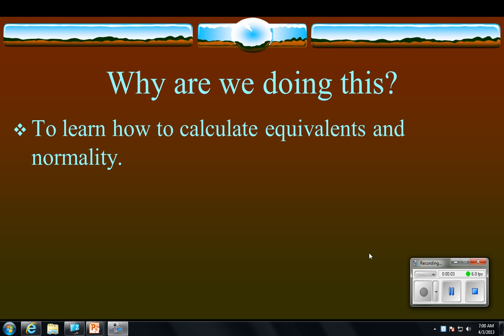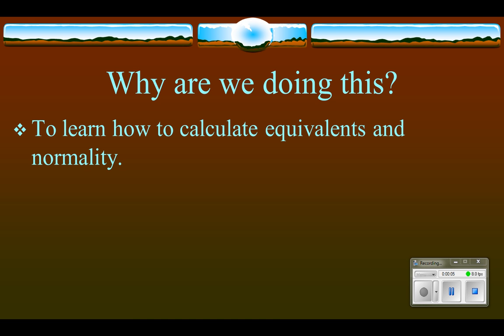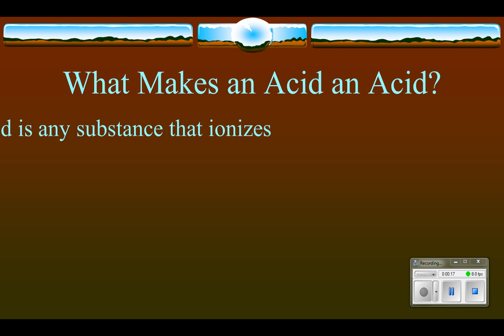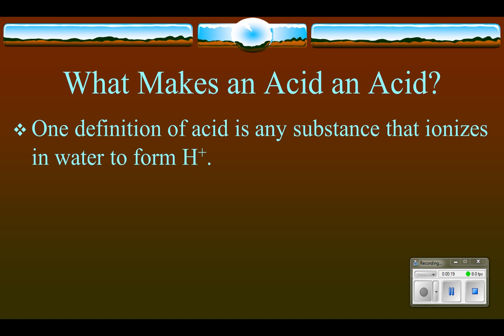In this video, we're going to learn how to calculate equivalence and normality — units that are going to be new to us, but very similar to ones we've had in the past. Let's start off by talking about acids. An acid, at least according to one definition, ionizes in water to form hydrogen ions. A pretty good definition of an acid is something that forms hydrogen ions when put in water.